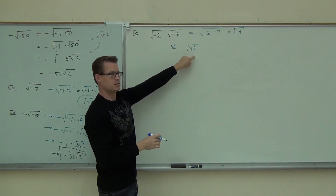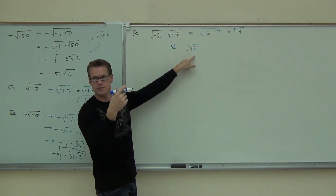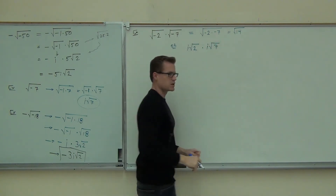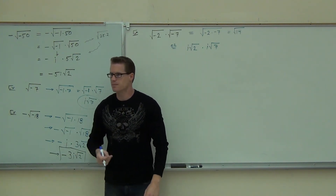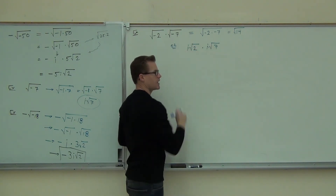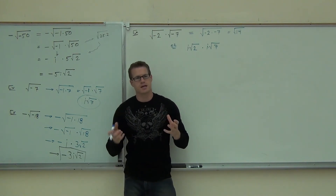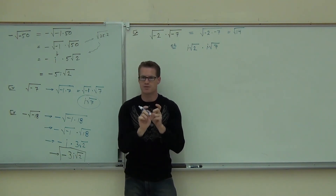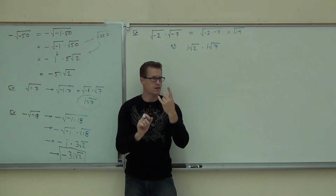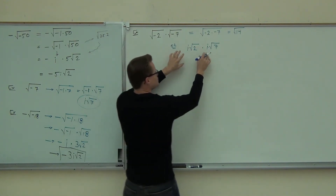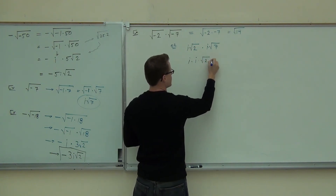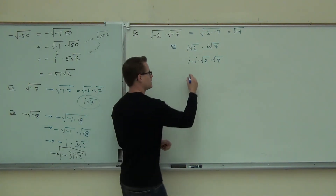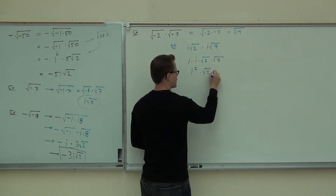Are you okay on getting from here to here? All I'd be doing is breaking it up as negative 1 — square root of negative 1 is i — then we have the 2. Times i root 7. This means i times root 2 times i times root 7. Multiplication is associative, so you can move around those factors. That really could be written as i times i times root 2 times root 7. How much is i times i? That's i squared times root 2 times root 7.